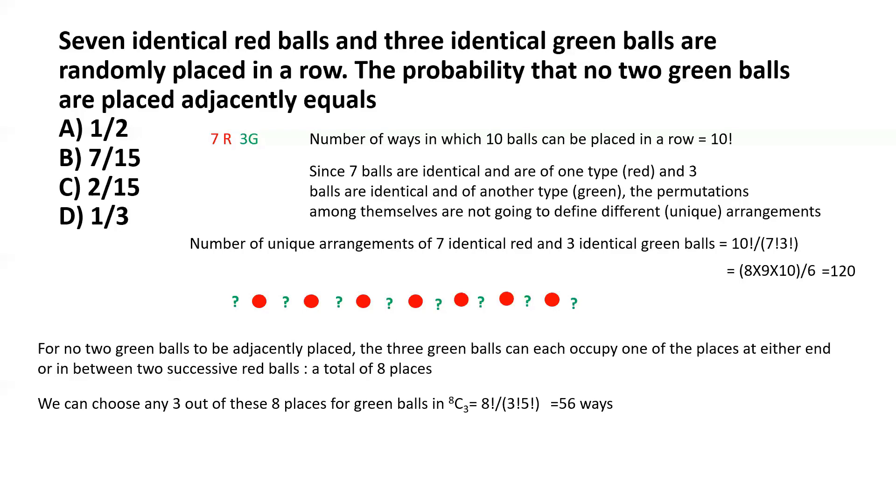There are 56 possible arrangements where no two green balls are placed side by side. So the probability will be simply 56 divided by 120.